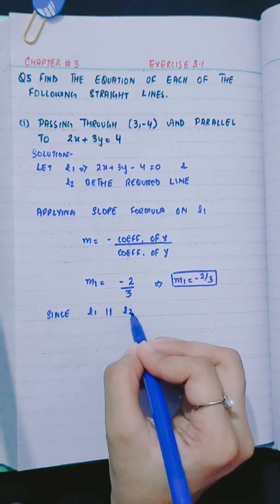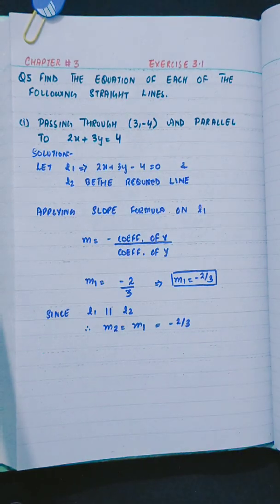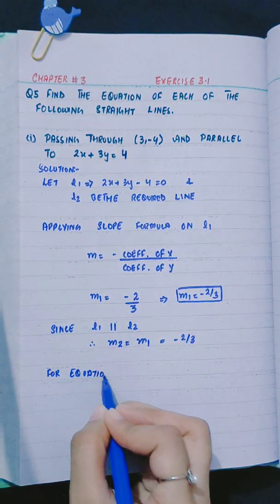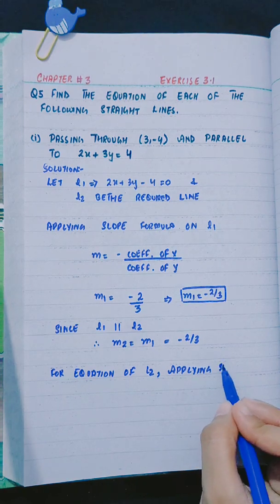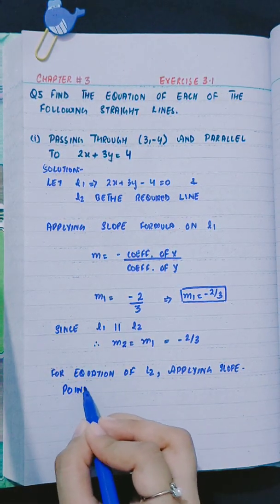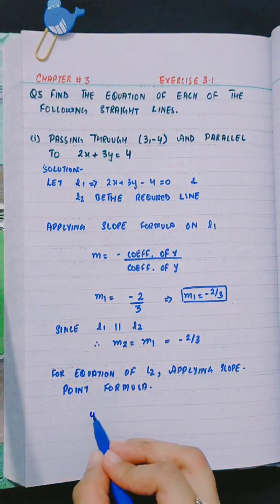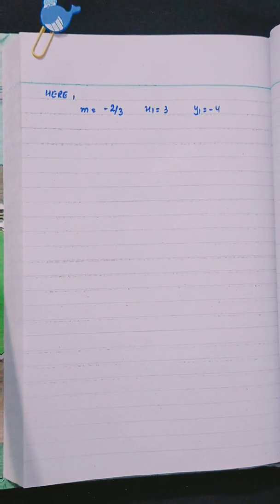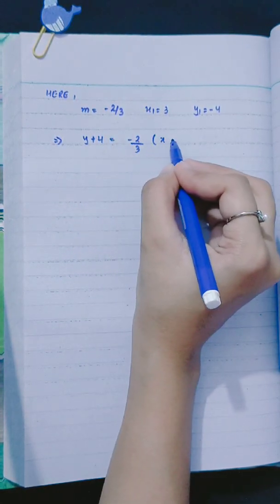Since l1 is parallel to l2, therefore m2 equals m1 equals minus 2 by 3. Now for the equation of l2, applying the slope-point formula: y minus y1 equals m times (x minus x1), where m equals minus 2 by 3, x1 is 3, and y1 is minus 4. So we get y + 4 equals minus 2 by 3 into (x minus 3).